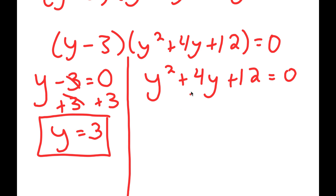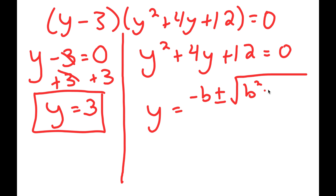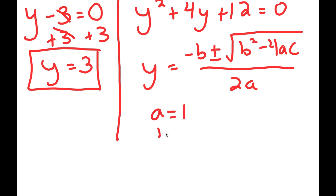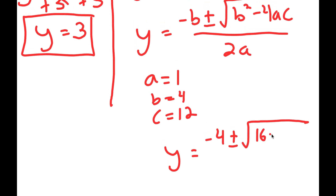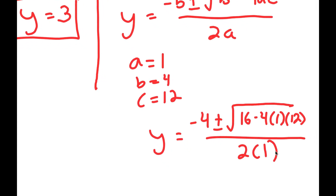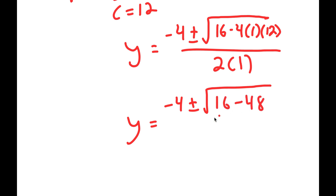For y squared plus 4y plus 12 equals 0, I can use the quadratic formula, which is negative b plus or minus the square root of b squared minus 4ac, all over 2a. In this case, a is 1, b is 4, and c is 12. So I get y equals negative 4 plus or minus the square root of 4 squared, which is 16, minus 4 times 1 times 12, all over 2a. This turns into y equals negative 4 plus or minus the square root of 16 minus 48 over 2.